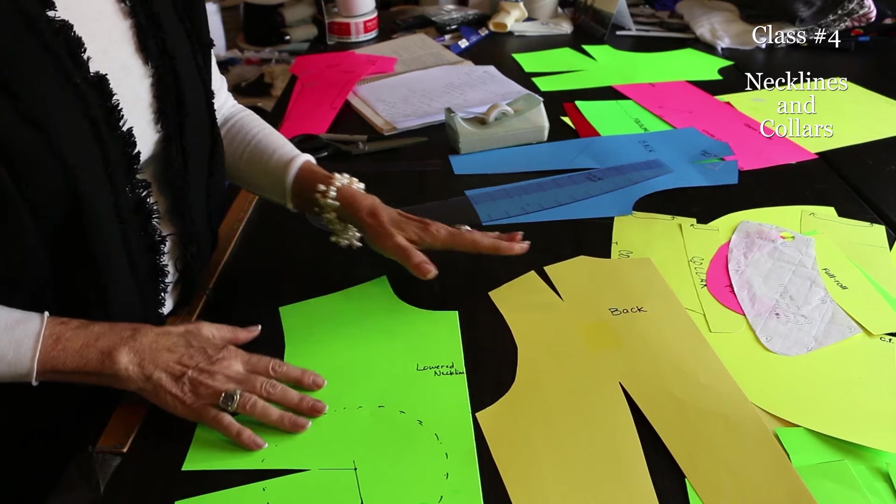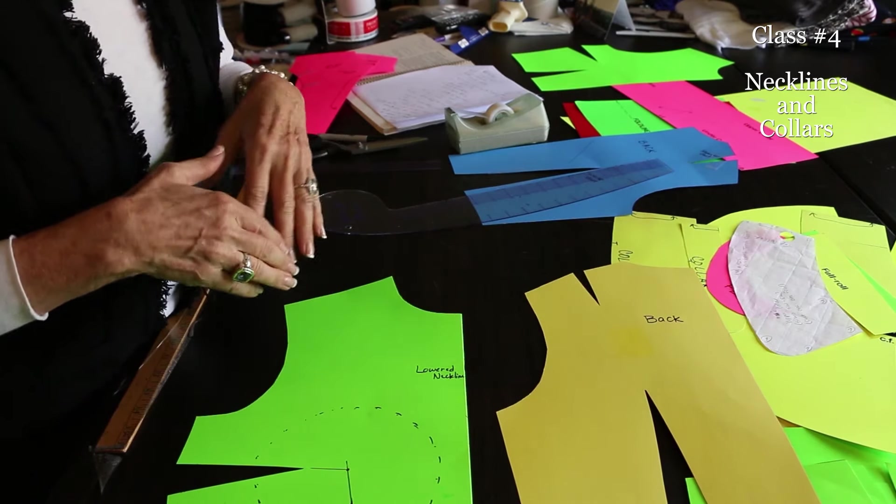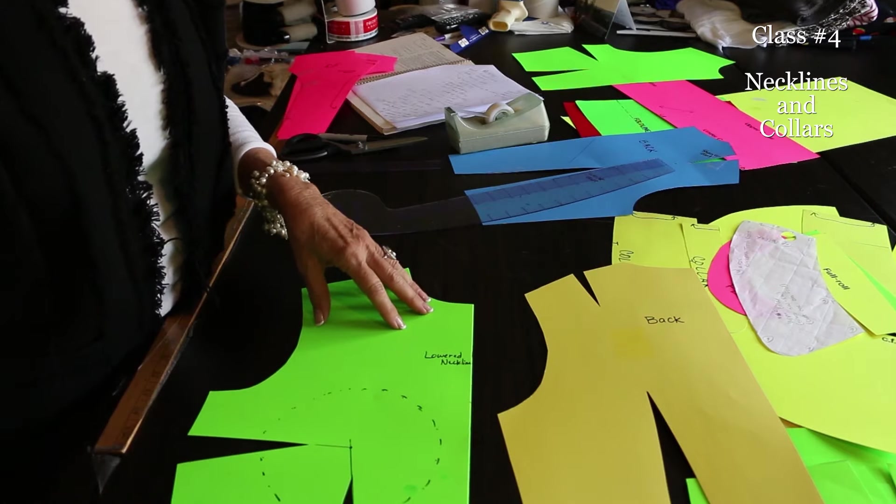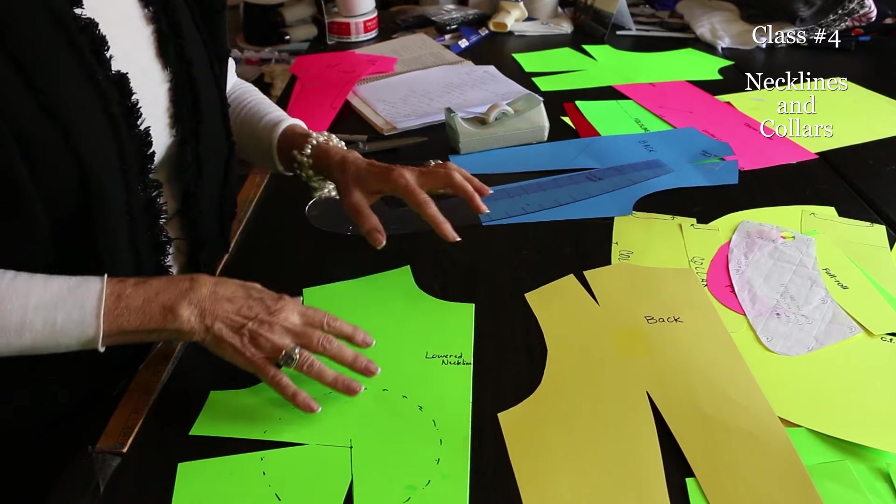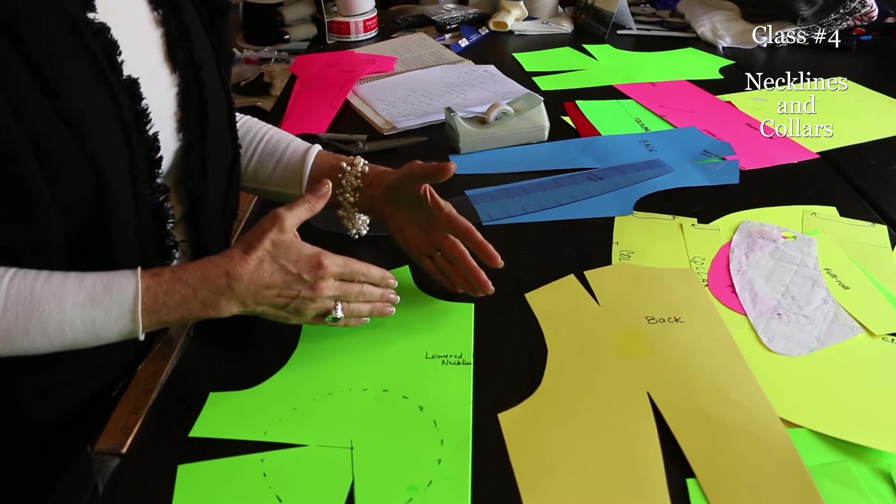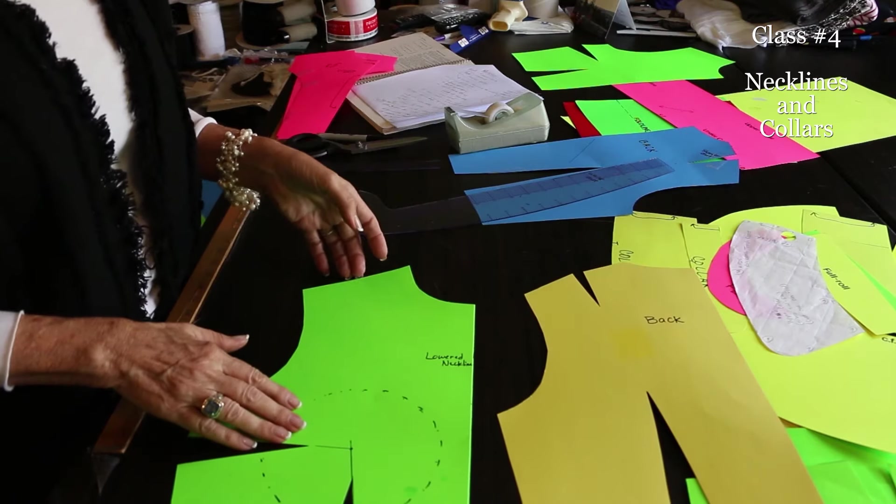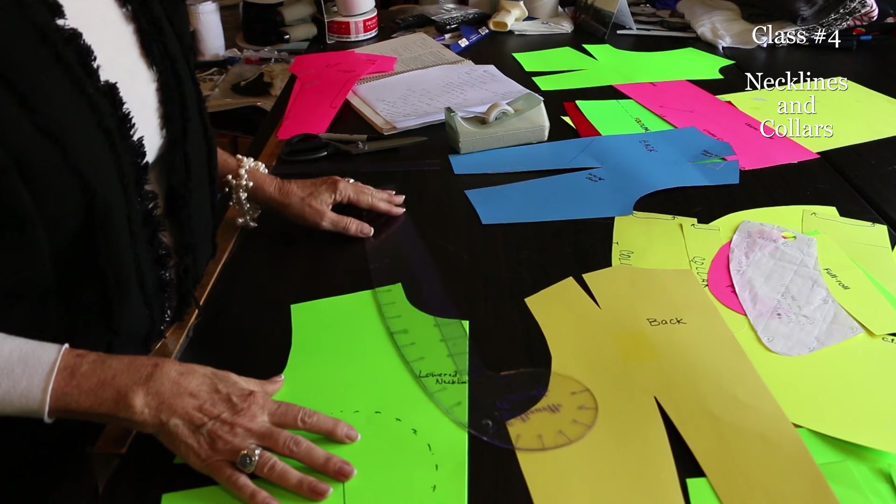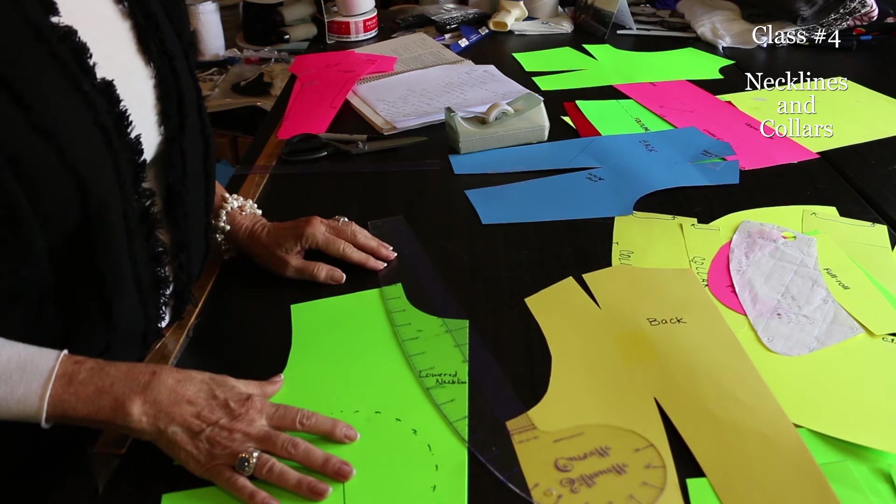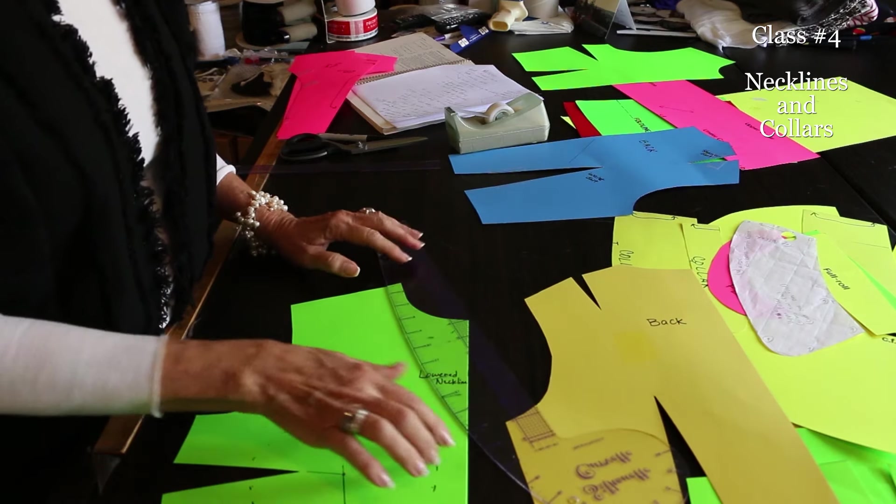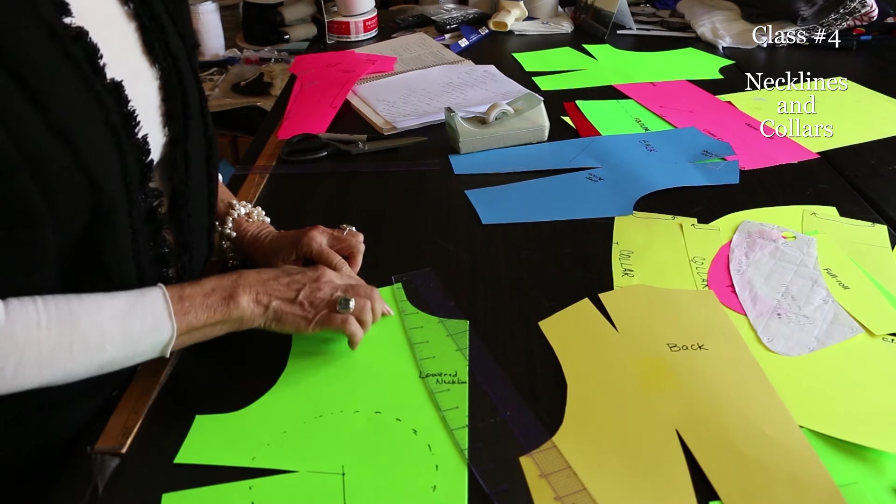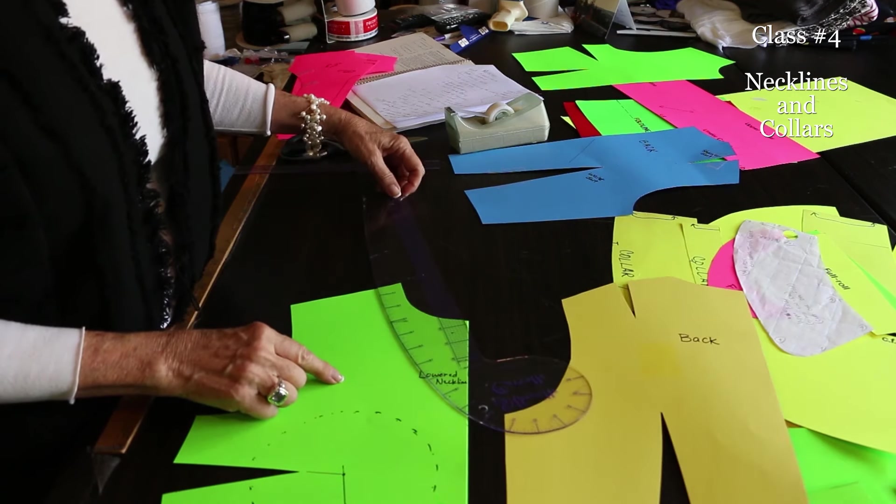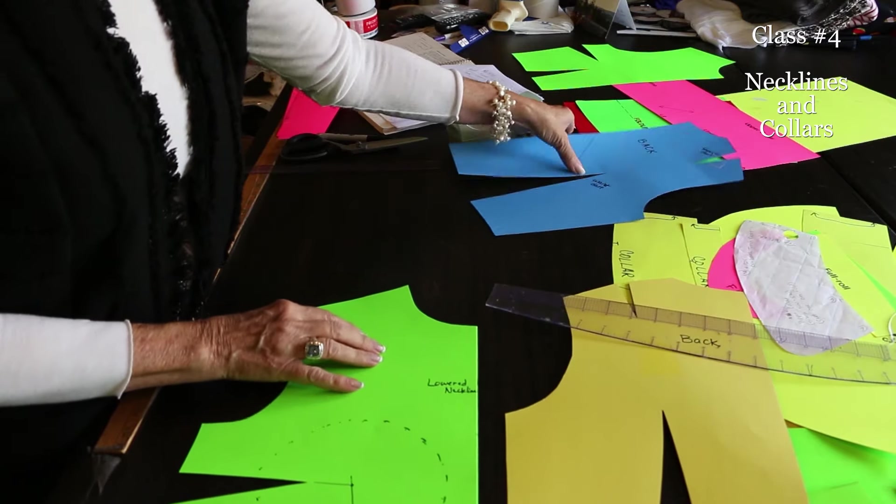We're going to deal with necklines and collars. The first thing I want you to understand is necklines are simply when there's been a change to the sloper, a change to the base. Collars are an added piece of fabric - something's been added in, a piece of fabric's been added on, or a pattern piece has been added on. So first, we're going to play with the French curve. I can do all kinds of things with the French curve - I can widen it, lower it, do a v-neck. A v-neck is not a straight line, it's a gently curved line. You can make it as wide as you want.